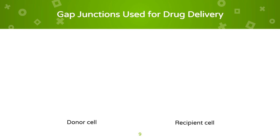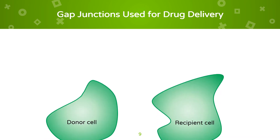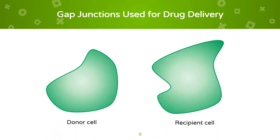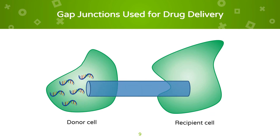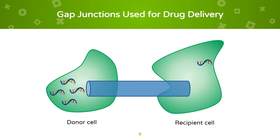Gap junctions can make drug delivery more efficient. The donor cell is loaded with the drug — in this case, the drug is in the form of RNA. The gap junction is used to transmit the drug from one cell to other cells. Without these gap junctions, it would be difficult to directly deliver the drug from one cell to another.